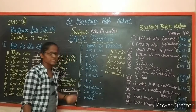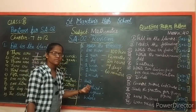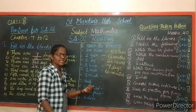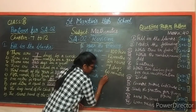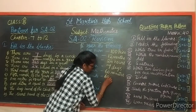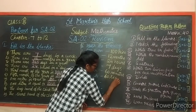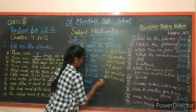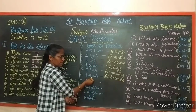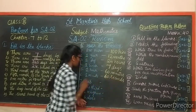Next: 1 minute has how many seconds? 60 seconds. 1 minute equals 60 seconds.